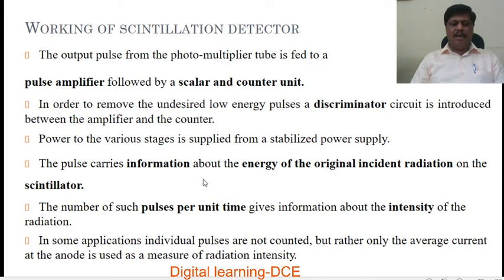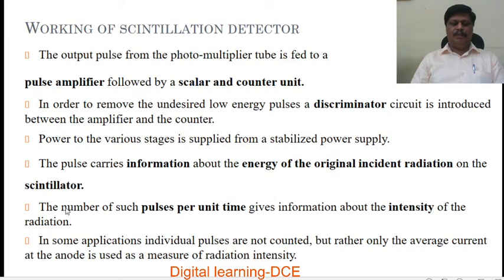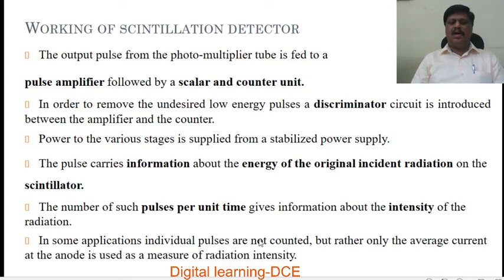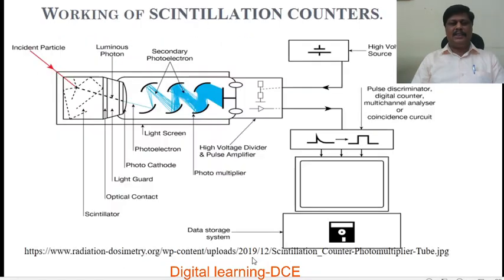The pulse carries information about the energy of the original incident radiation on the scintillator. The number of such pulses per unit time — that is, the count rate — gives information about the intensity of the radiation. Intensity of radiation is directly proportional to pulses per unit time or count rate. In some applications, individual pulses are not counted, but rather only the average current at the anode is used as a measure of radiation intensity.